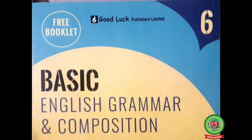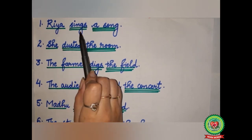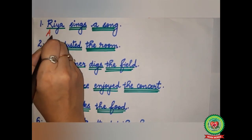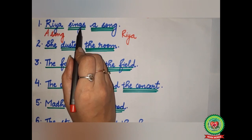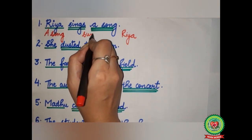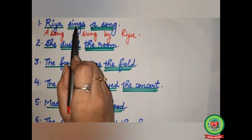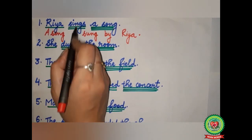Now we will discuss some more examples for simple present and simple past tense. 'Ria sings a song.' Ria — subject, single underline. 'Sings' — double underline. A song — object, triple underline. A song will come in the beginning, Ria will go to the last. 'Sings' will change into its past participle form 'sung.' Before Ria we add 'by.' Since 'sings' is present form, we add 'is.' The answer: 'A song is sung by Ria.'